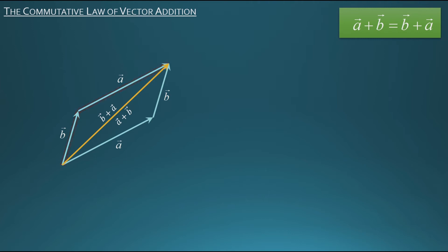So notice that no matter whether I do a plus b or b plus a, I get the exact same resultant. So from that we can conclude that vector a plus vector b is the same as vector b plus vector a. And that's the commutative law of vector addition.